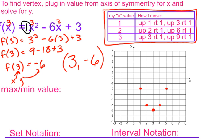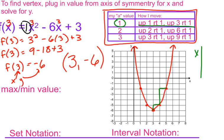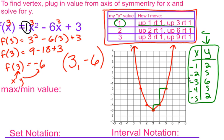Now I can connect these dots and make my parabola. Remember it goes all the way through the graph. Since my a value is 1, the movement pattern is: up 1 right 1, up 3 right 1. If you don't remember that pattern, it always works to graph on the calculator and look at the table. You could also make an x-y table, putting the vertex in the middle and picking two points on each side.